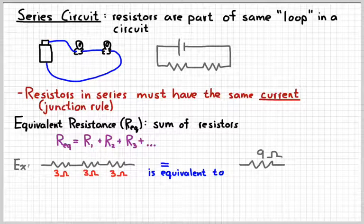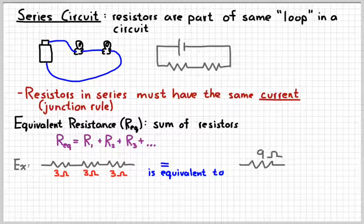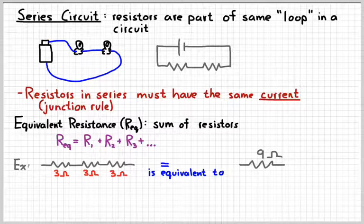Now there are a couple different uses for that. First, we're going to use that to solve problems — like if I ask you what's the current through all those resistors, you're going to need to figure out the equivalent resistance first. Second, which is a more practical aspect, suppose you're building a circuit and you need a 9-ohm resistor but you don't have any. If you have a bunch of 3-ohm resistors, then you can make your own 9-ohm resistor out of three 3-ohm resistors. People that are building circuits will use equivalent resistance to fill in gaps where they don't necessarily have the correct size resistor.